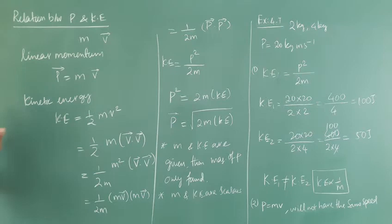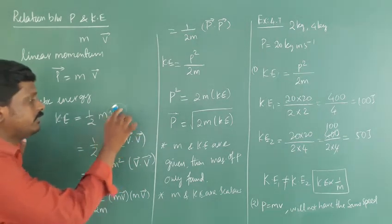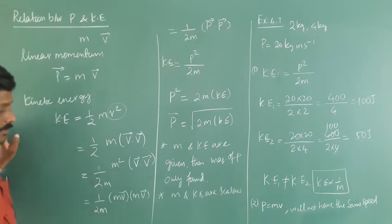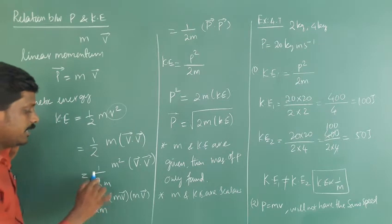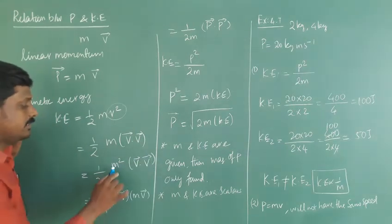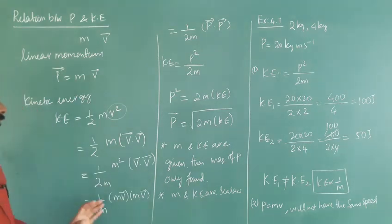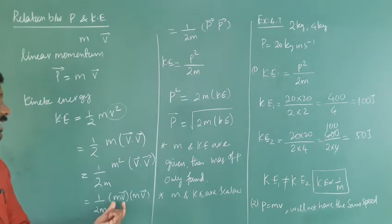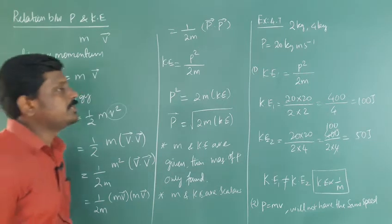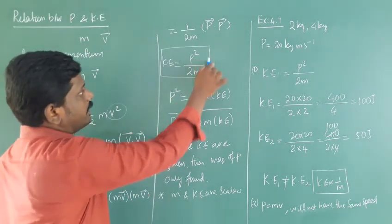Half mv square, we can write as v square, that is v into v. Then multiply and divide by m in both numerator and denominator: m into m, m square, one by 2m. So m square into v into v. Split m into m, so mv into mv. One by 2m, mv into mv. Mass into velocity is momentum, so P into P, P square. So kinetic energy is equal to P square by 2m. This is the relation between kinetic energy and momentum.